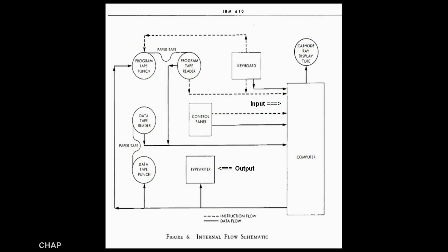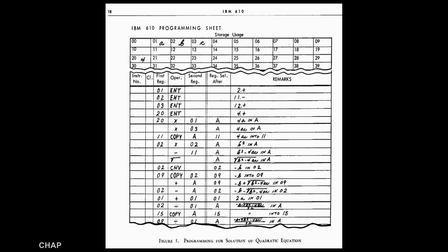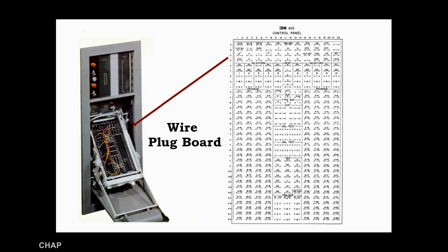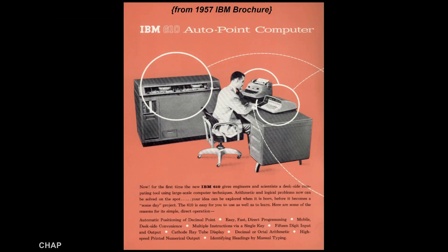The 610 was actually a complex programming machine. It came with a 65-page manual, which was vital to understanding and correctly operating the machine. The 610 sold for $55,000 new and weighed nearly 1,000 pounds. By 1957 standards, this was a small and affordable computer.